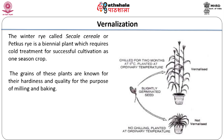The winter rye called Secale cereale or Petkus rye is a biennial plant which requires cold treatment for successful cultivation as a one-season crop. The grains of these plants are known for their hardiness and quality for milling and baking. Farmers used to cultivate this variety by subjecting water-imbibed grains to cold treatment, then growing them in the spring and harvesting them in summer. Clipper reported this phenomenon and extensive research work was done in this field.